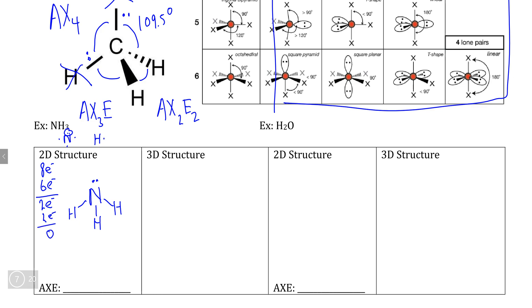If we find what the AXE notation is, we know that nitrogen is our A, our central atom. Nitrogen has three hydrogens attached to it, all single bonds. So this would be AX3. But for the first time, we see a lone pair, which makes nitrogen AX3E1 or simply AX3E.